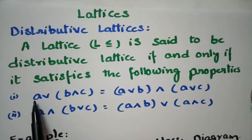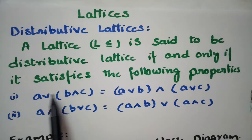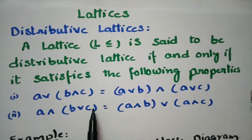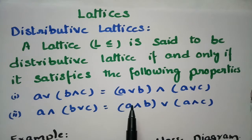A is distributed to B as well as C in both properties, which is why it is called a distributive lattice.